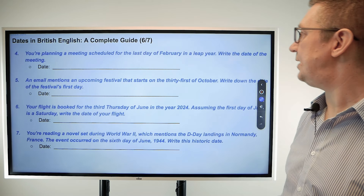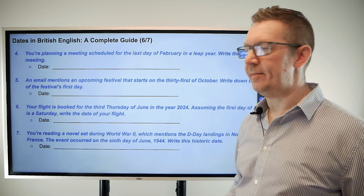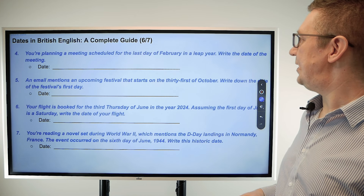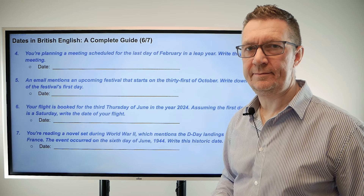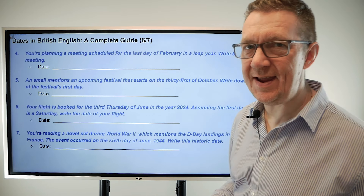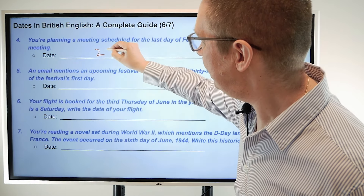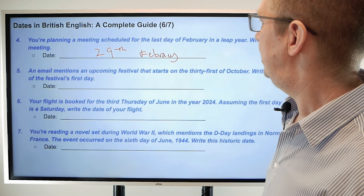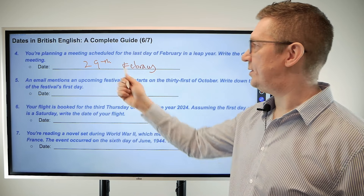Number four: you're planning a meeting scheduled for the last day of February in a leap year — write the date of the meeting. In a leap year, the last day of February is the 29th. We say 'the 29th of February' and write it as '29th February' — no 'the,' no 'of' required in the written numerical form.